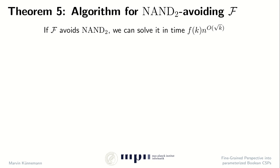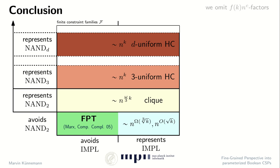This shows how we can solve the weighted DAG implications problem in a running time of n to the O of square root of K. We would also need to show that if the constraint family avoids the binary NAND function, then we can always solve it in time n to the square root of K via reduction to the weighted DAG implications problem — this is also an interesting reduction, but I will skip this in the interest of time.